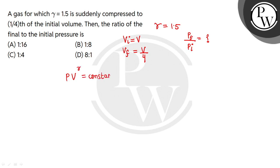So I can write here: P_i V_i^gamma would be equal to P_f V_f^gamma. Now, here we can write P_f by P_i would be equal to V_i by V_f to the power gamma.